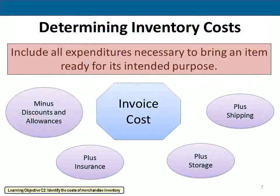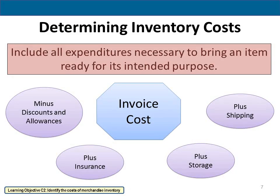On this slide we need to determine the cost of inventory. The cost of inventory, like the cost of any other asset, requires including its purchase price — what we call the invoice cost — plus any other costs the company needs to pay to make the asset ready for use. These include shipping cost, storage cost, and insurance cost. Of course, we also need to deduct from the invoice cost any discounts and allowances.